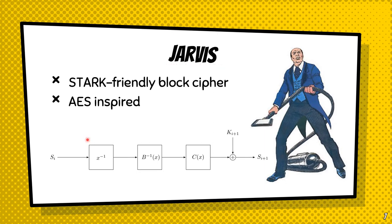This is how my colleague Tomer Ashur and I started on the development of the block cipher JARVIS. We were contacted by the company Starkware to investigate block ciphers and general primitives efficient for their algorithmic design. We found the AES block cipher was quite efficient because its S-boxes work over bytes, and by increasing the size of the S-box, we could gain a more efficient cipher.